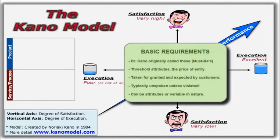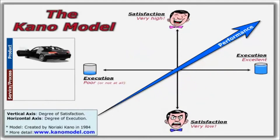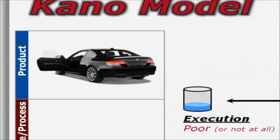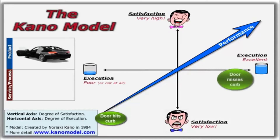The second type of requirements are called basic requirements. Their presence doesn't directly add satisfaction, but their absence will result in extreme dissatisfaction. These are the requirements that customers typically don't give much thought to or even talk about, unless they are violated. They are the givens — items that are expected and taken for granted. A product example might be a car door's ability to clear a standard curb when parked next to it. If it hits the curb when opening the door, customers will obviously be quite upset.